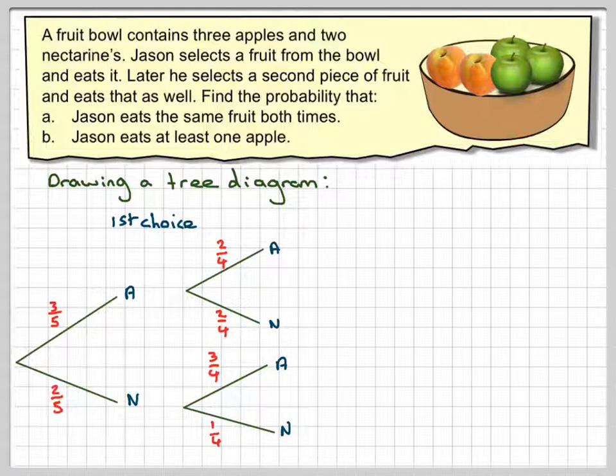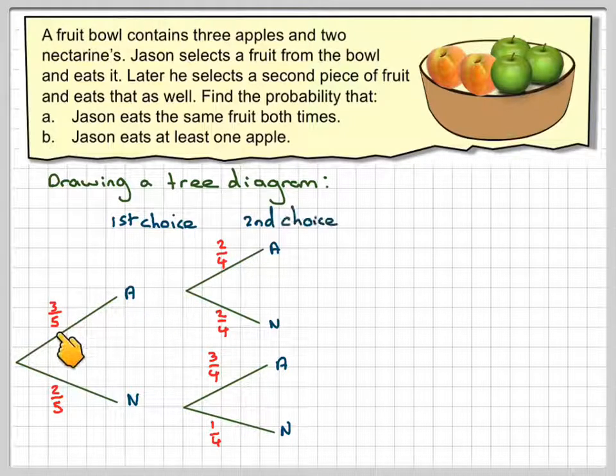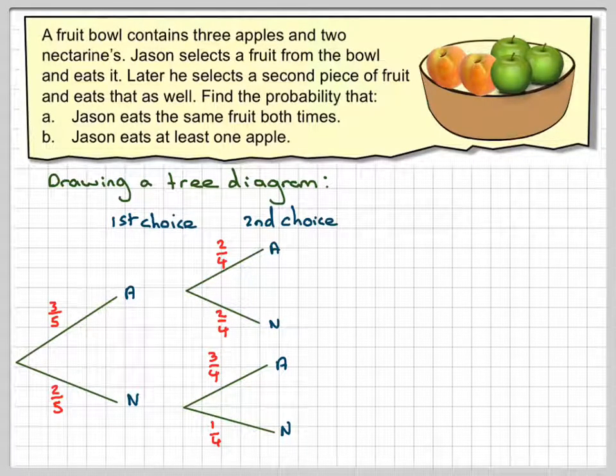So same idea as before, to get the probabilities we will multiply across the arm. These are called dependent events.